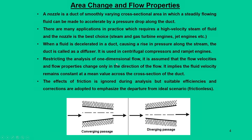Our analysis will stick to one-dimensional flow. In one-dimensional flow, we can have a converging passage where area decreases along the direction of flow, or a diverging passage where area increases along the direction of flow. We ignore the effect of friction, so it is a frictionless flow. We also assume that fluid velocity remains constant at the mean value; although the area changes, at any particular section we take one mean velocity value.